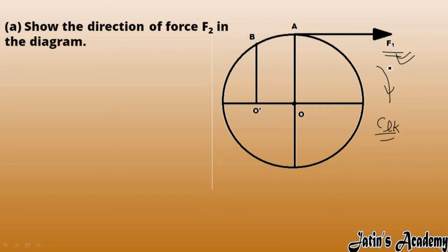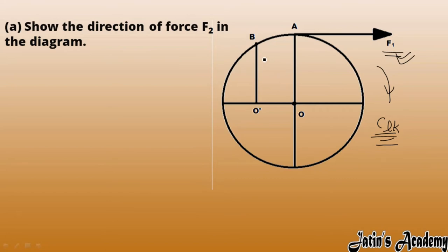Now we have to apply force F2 at B in such a way that it creates an anticlockwise moment. The reason we need anticlockwise is that the wheel is stationary — no motion means the clockwise moment and anticlockwise moment must be equal, cancelling each other. So force F2 at B must be applied to create an anticlockwise moment, and it will be in the downward direction.